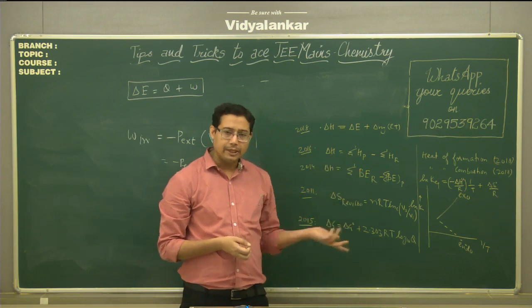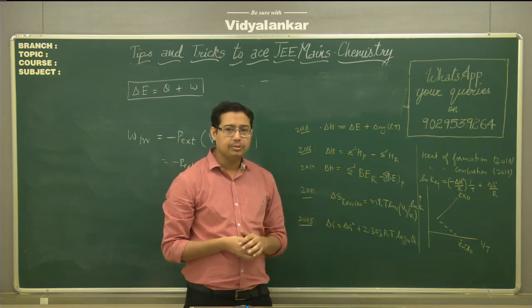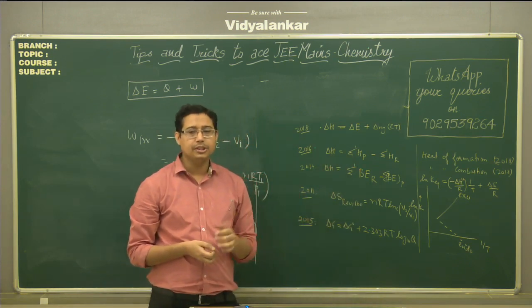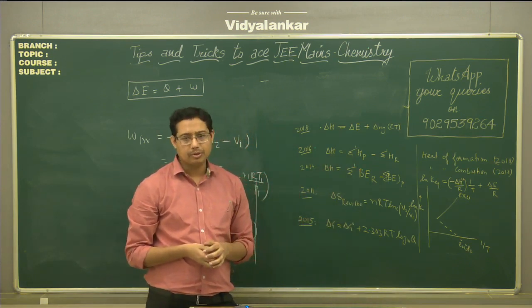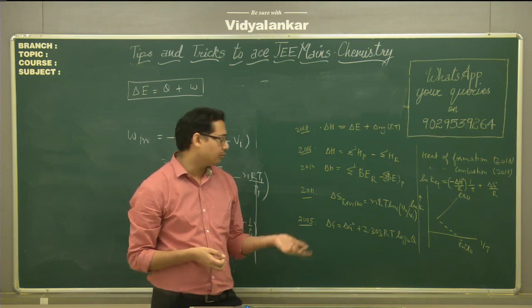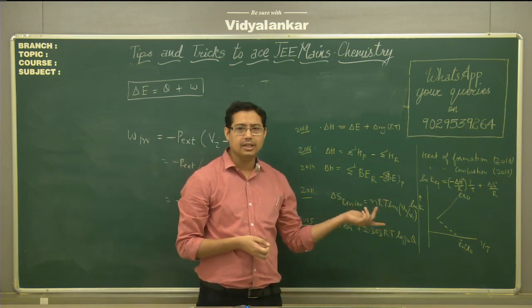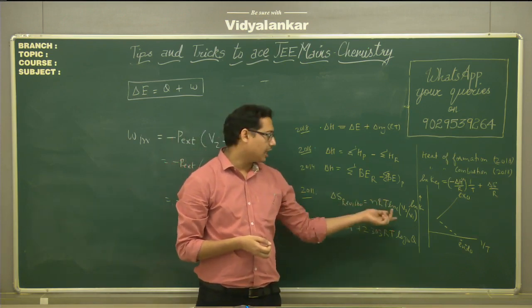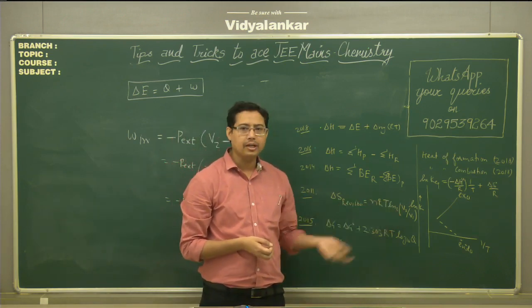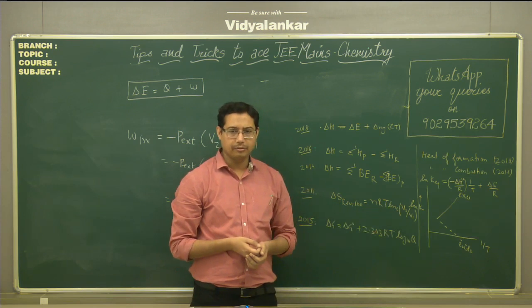Next we have entropy-related questions. For the entropy change in a reversible isothermal process, ΔS = nR ln(V2/V1).